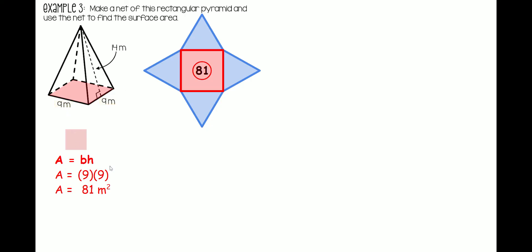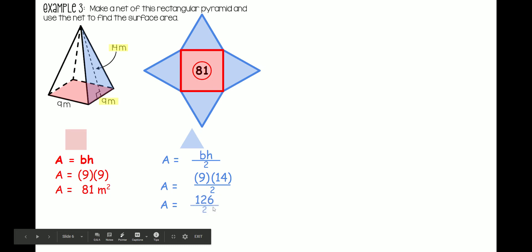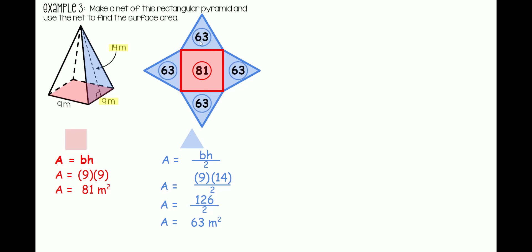Next, we need to find the sides. All of our sides are going to be the same — a base of 9 and a height of 14. The area of a triangle is base times height divided by 2. So replace b with 9 and replace h with 14, divided by 2. 9 times 14 is 126, divided by 2 is 63 meters squared. Because all of these triangles are the same, write 63 in all of them.